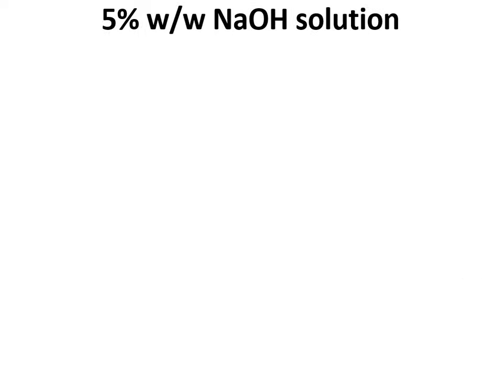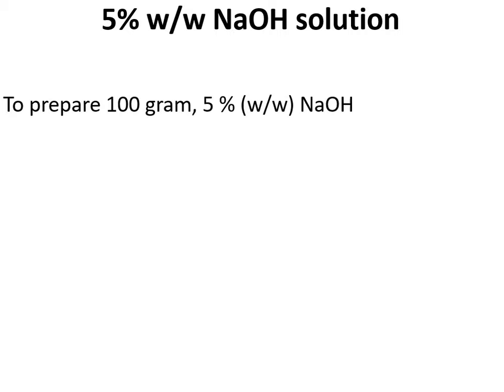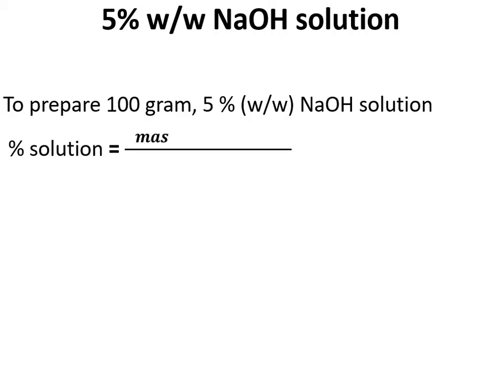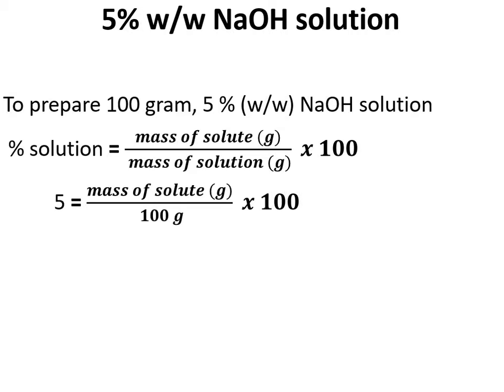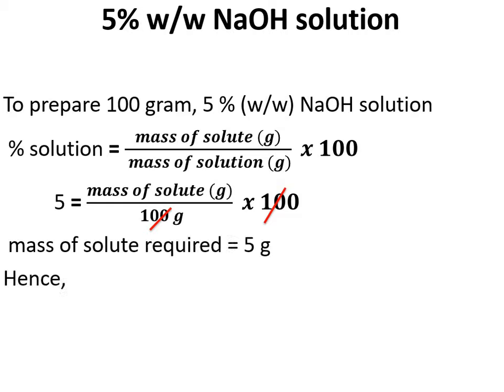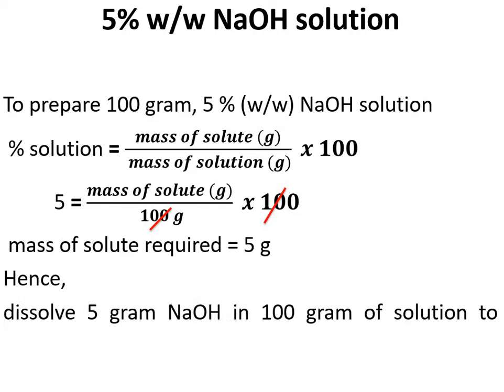Let's prepare a 5% weight by weight sodium hydroxide solution. To prepare 100 grams of 5% weight by weight NaOH solution — both solute and solution are weighed in grams — we use the second equation: percent solution equals mass of solute in grams divided by mass of solution in grams, multiplied by 100. Putting in the values: percent solution is 5, mass of solution is 100 grams, and after calculating we get the mass of solute required equals 5 grams. Hence, dissolve 5 grams of sodium hydroxide to prepare 5% NaOH weight by weight solution.